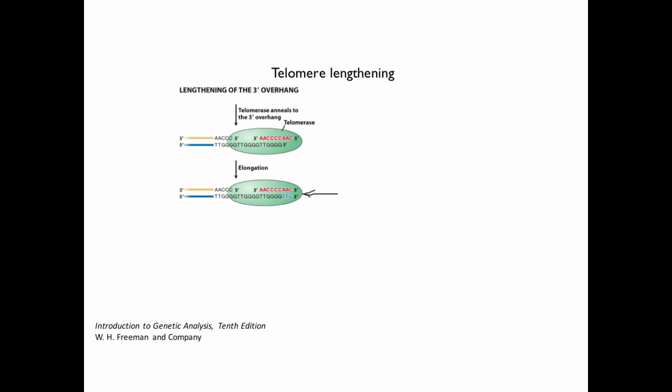So now you can see that telomerase is adding nucleotides to the 3' overhang, directed by the RNA template built into it, again, through reverse transcription, meaning you're using an RNA template to guide the synthesis of new DNA.